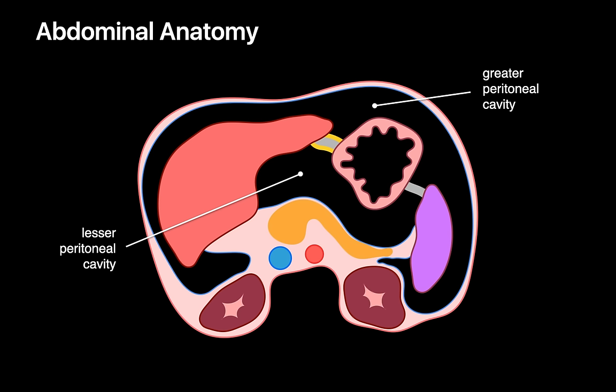The most gravitationally dependent portions of the peritoneal cavity belong to the greater peritoneal cavity, or sac, which is why things like ascites, hemoperitoneum, peritoneal metastases, and abscesses preferentially collect within the greater sac. Although fluid, metastases, and abscesses are less prone to collect within the lesser peritoneal cavity, direct spread of disease from organ to organ — for example, pancreas or stomach — tends to be more of a problem in the lesser sac.